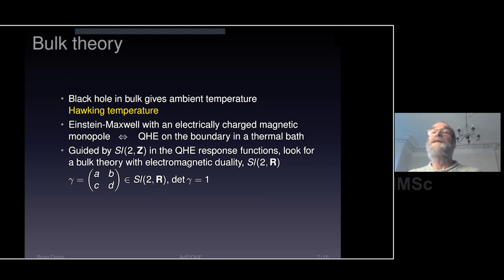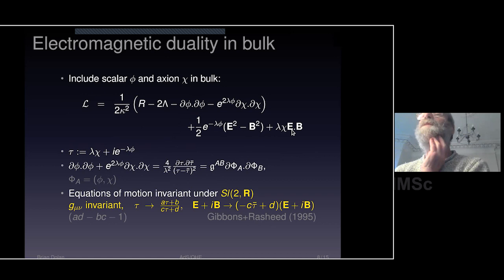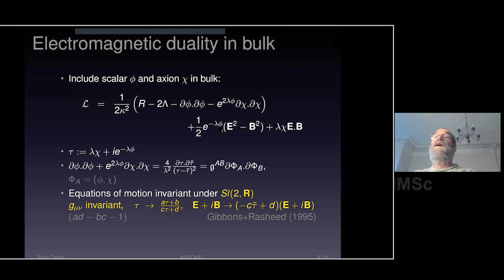Guided by the modular symmetry in the quantum Hall effect response functions — the conductivity being a response function — I'm going to look for a bulk theory that has electromagnetic duality, in the first instance SL(2,R). Fortunately, Gibbons and Rashid gave us just such a theory. If we include a scalar field φ and an axion χ, and couple φ and χ to the electric and magnetic fields, χ becomes a topological susceptibility, and φ is essentially a space-time dependent electric permittivity.